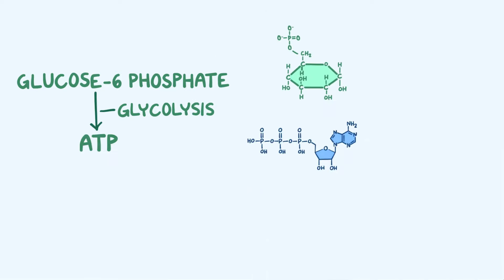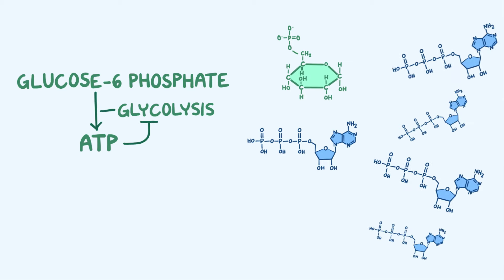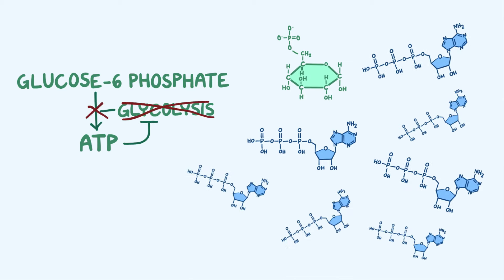Over time, ATP levels start to rise and that inhibits certain enzymes in glycolysis. When that happens, the extra glucose 6-phosphate can be used to make glycogen, and that usually takes place in the liver and muscle cells.